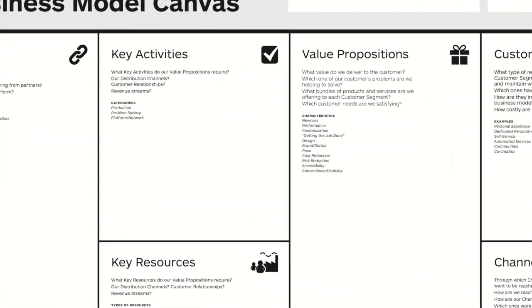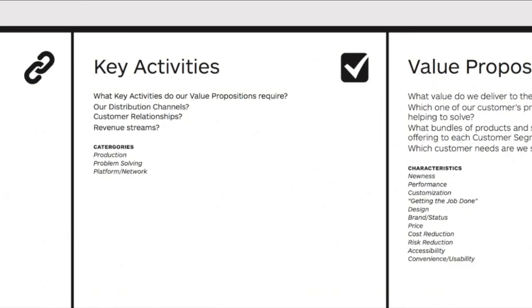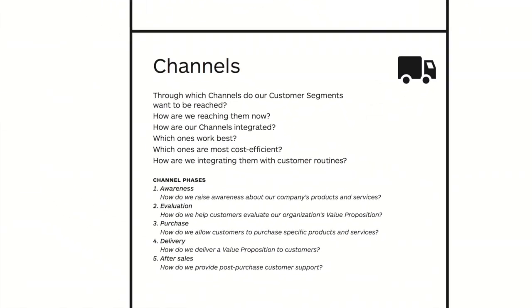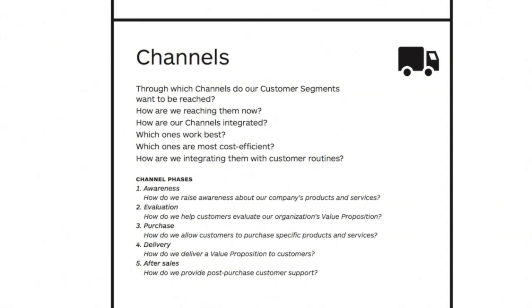Then key activities — what are the things that you will be doing in that particular organization. The other point to focus on is channels: how will you communicate with that buyer persona? You need to think about whether it is going to be face-to-face interaction at events, online interactions, or any other activities that you'll be doing in the future.